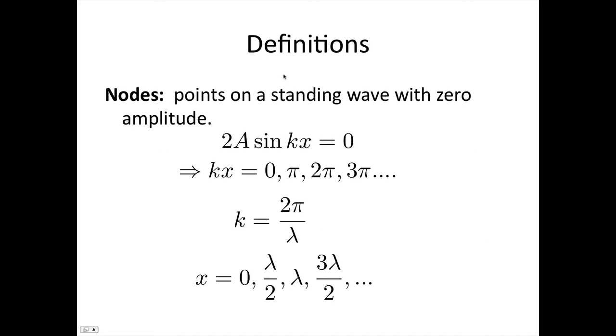Some definitions. We saw on the diagram that nodes were the points on the standing wave with zero amplitude. So those points are where 2A sin(kx) equals 0. So necessarily kx equals 0, π, 2π, 3π. We can write that as nπ.